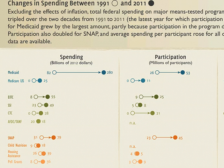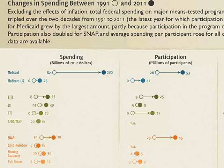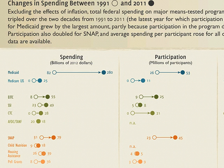Here's that dot plot zoomed in. You can see we've got the changes in spending between 1991 — the open circles — and 2011 — the closed circles, or closed dots. John's organized it with blue programs, green programs, and orange programs, and it's very easy to read. Let's look at just one section. Medicaid spending on the top in blue has increased from $82 billion in 1991 to $280 billion by 2011. Participation has also increased, and the third column — which I've cut off so you can see it nice and large — was the average spending per person, which is the logical next step in this equation in your mind.